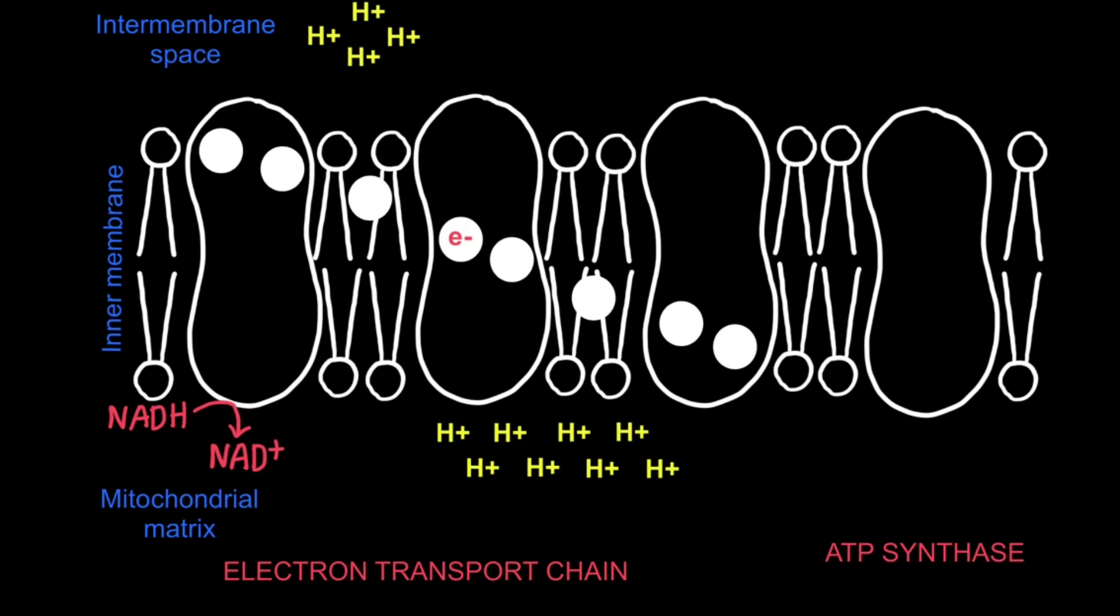FADH2 enters the electron transport chain at a lower energy level than NADH. The FADH2 is also oxidised into FAD, releasing electrons which are picked up by the electron carriers in the chain.